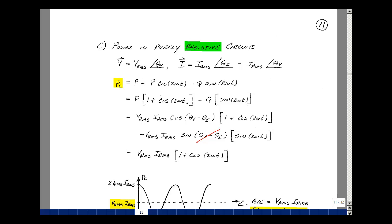But because these are in phase, we're taking the sine of zero, which is equal to zero. So all we have then is V_RMS times I_RMS times 1 plus the cosine of 2ωt.